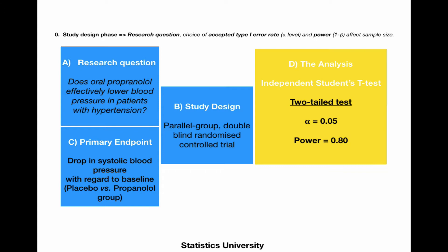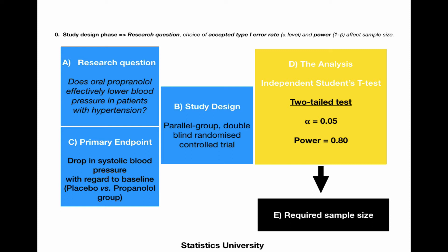In the analysis, we are going to use an independent student's t-test. We're going to use a two-tailed test with alpha levels of 0.05 and a power of 0.80. And then we're going to calculate the required sample size.